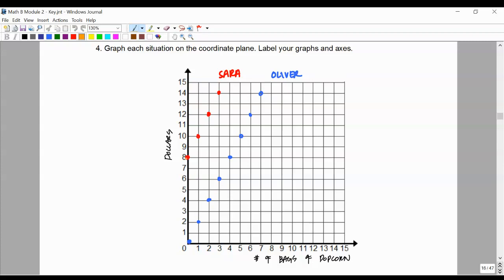And then we see Sarah's graph. It's non-proportional, but it is linear.